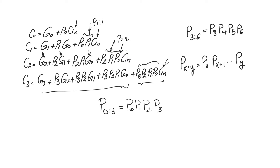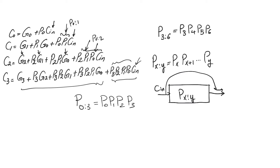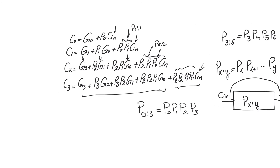Group propagate acts on a range and indicates that the whole range of bit positions is bypassing or propagating. Basically, if you have a carry-in and a group propagate from x to y equal to one, then carry-in is going to pass through to carry-out and bypass everything in the middle. This is very similar to the select line of the multiplexer in carry-bypass adders.